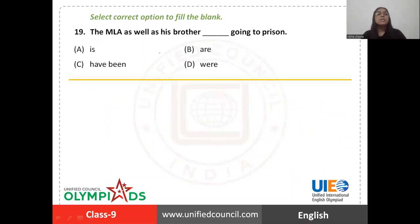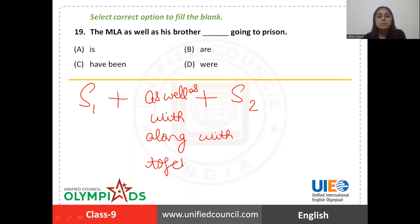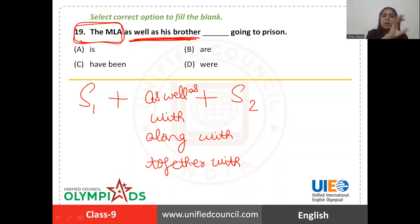Now question number nineteen: 'The MLA as well as his brother blank going to prison.' Whenever you find two subjects connected with 'as well as', 'with', 'along with', or 'together with', the verb should come according to the first subject only — it will not be affected by the phrase 'as well as' or the subject written after it. The first subject here is 'the MLA', which is singular, so the verb should be singular. 'Is' is the right answer.